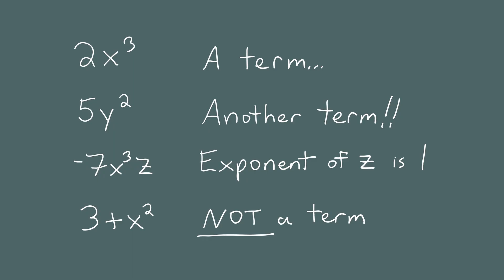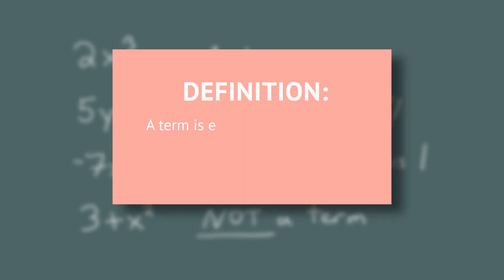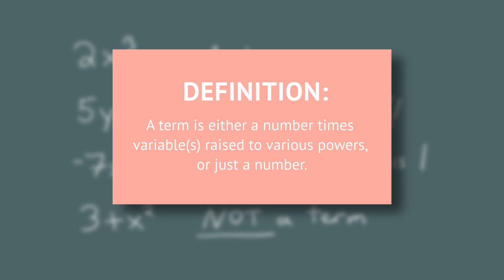Notice how I snuck in a new layer to the word "term." 3 is a term, even though it's not multiplied by any variables. So we should probably update our definition: a term is either a number times some variables raised to various powers, or just a number.